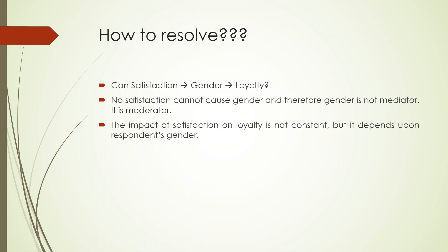I'll give you an example to understand how we can resolve whether it is a mediation effect or a moderation effect. In the previous example, organizational commitment was mediated by job satisfaction, and job satisfaction was influencing staying intention. But if satisfaction is leading to loyalty and we introduce gender — can satisfaction change the gender? No, it cannot. Therefore, gender cannot be included as a mediating variable. Instead, the relationship of satisfaction with loyalty is altered by gender, and therefore gender is introduced as a moderating variable.